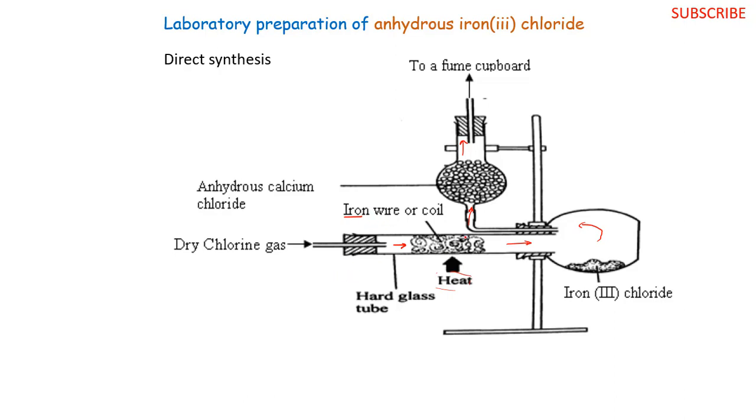After that, we shall heat our iron wire until red hot. We need to strongly heat the iron wire until it becomes red hot, that is to say until it starts glowing. At that point, we shall pass our dry chlorine over our red hot iron. At this point, even if we stop heating, the reaction is kind of self-sustaining.